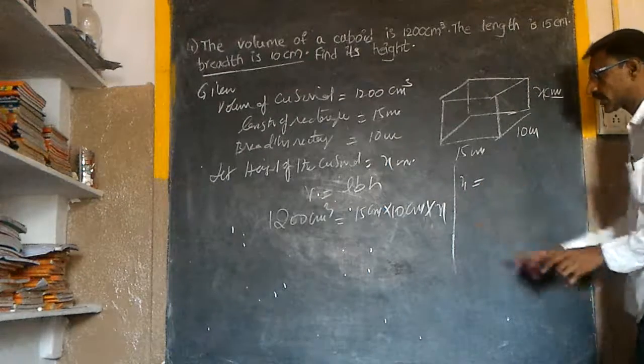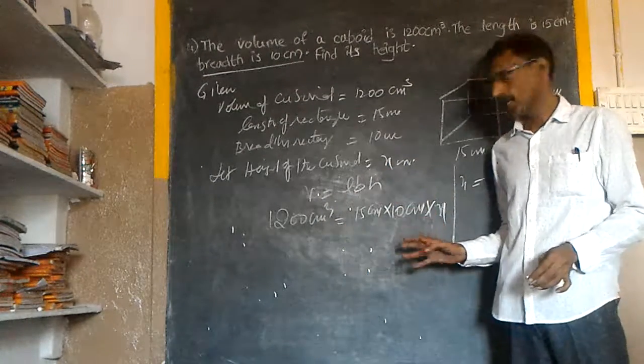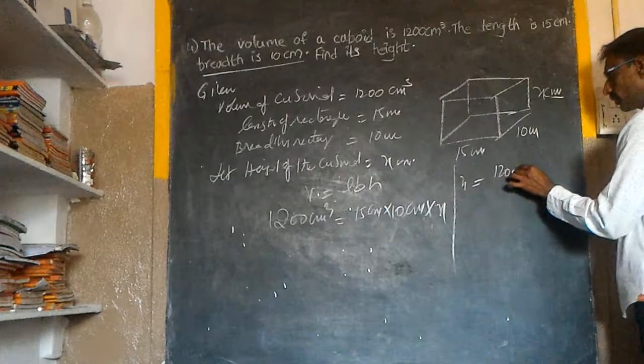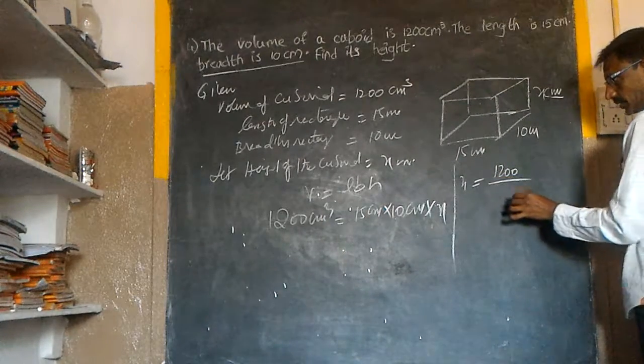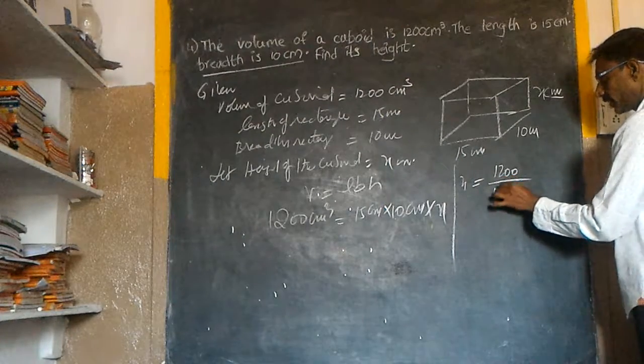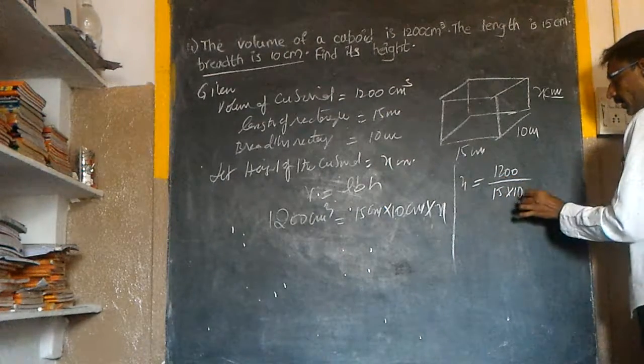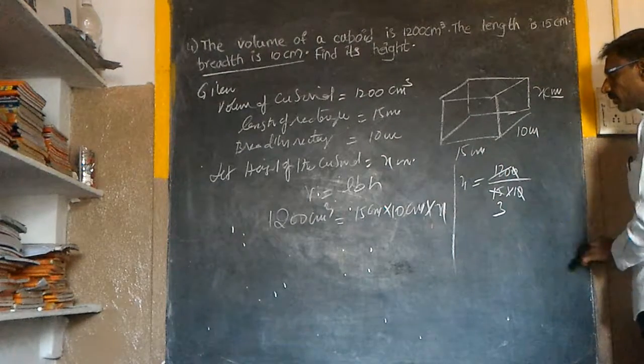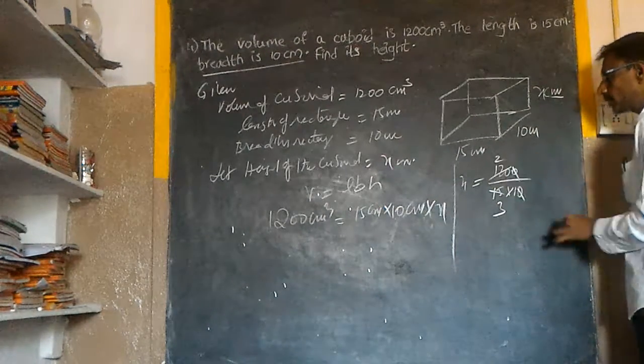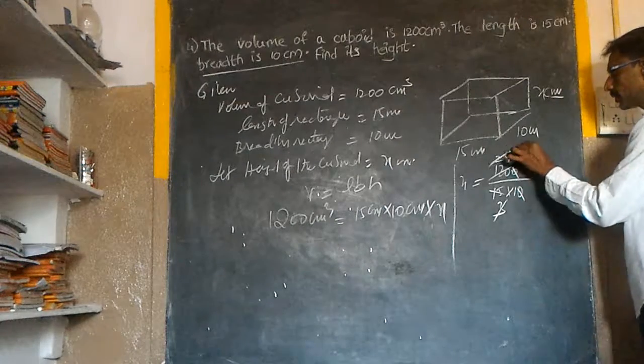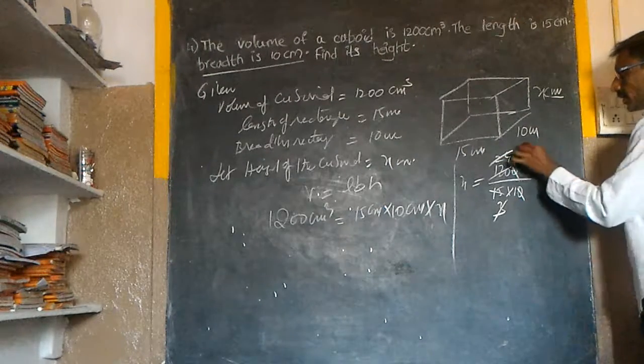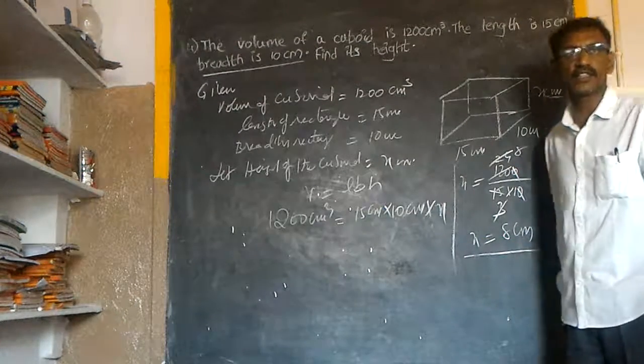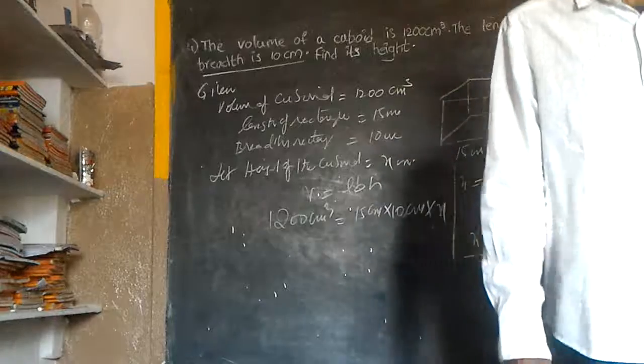Therefore, X is equal to volume divided by length times breadth. 1200 divided by 15 into 10. 15 into 10. 5 times 3, 5 times 2 are 4, 5 times 3, 8. So X is equal to 8 centimeters. X is the height.